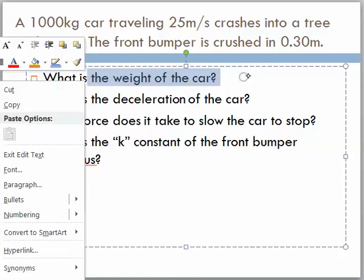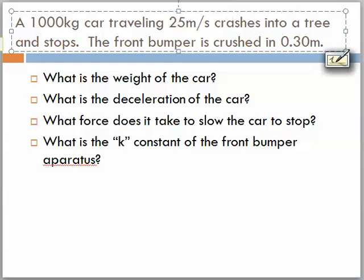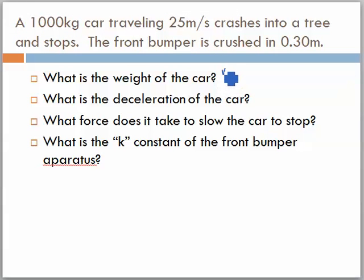The first one says what is the weight of the car? And as I look at this, I think to myself, my equation for weight is mass times gravity. Well, what is the mass? It's 1,000 kilograms times 9.8. So my first one then has a weight of 9,800 newtons.